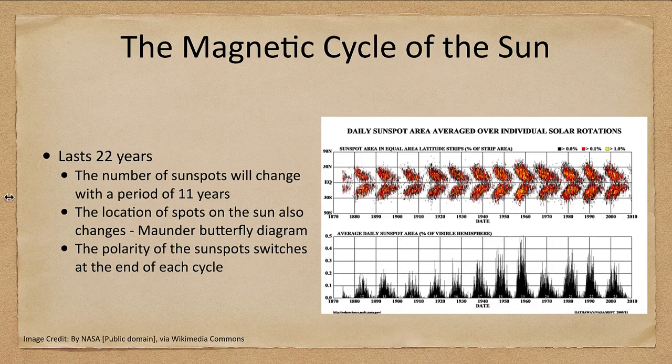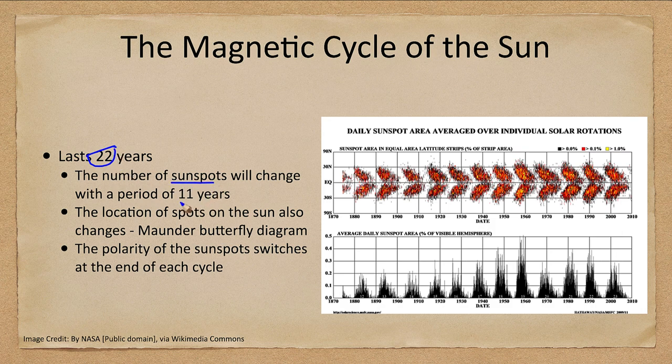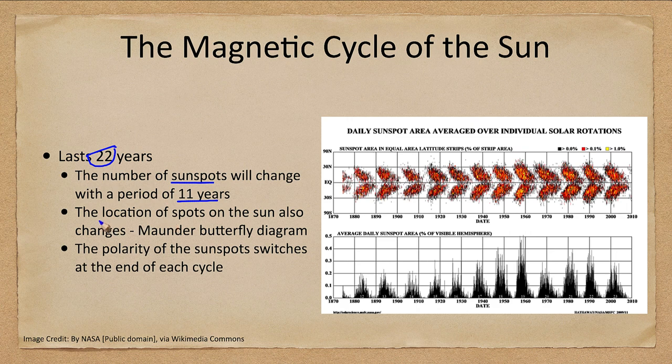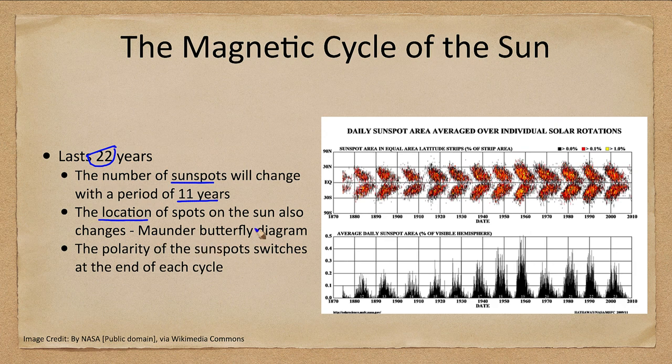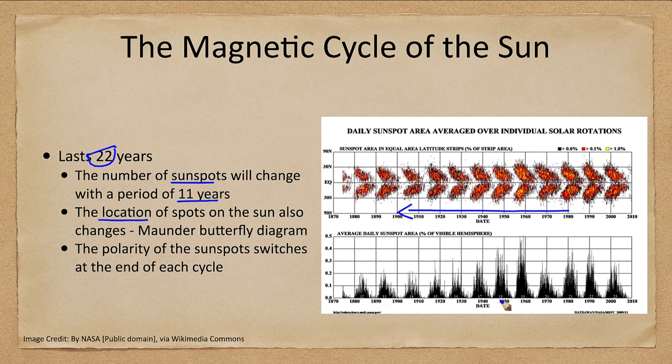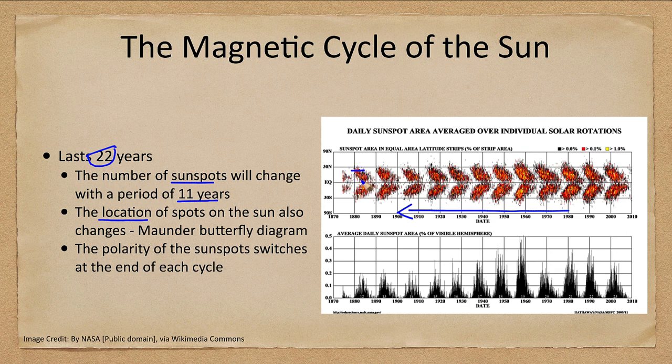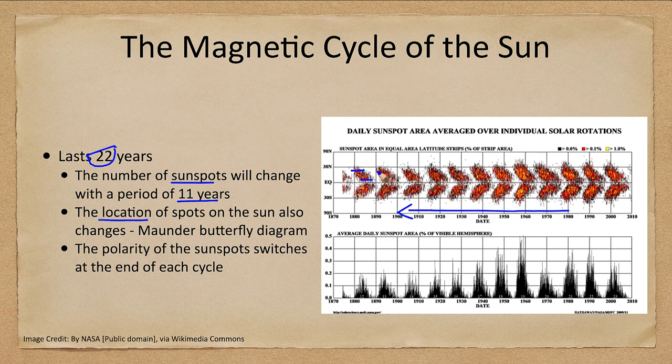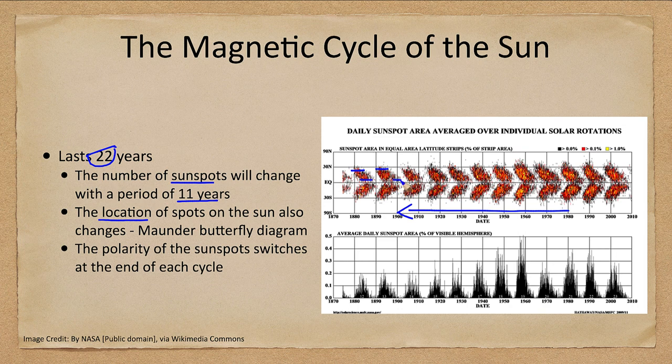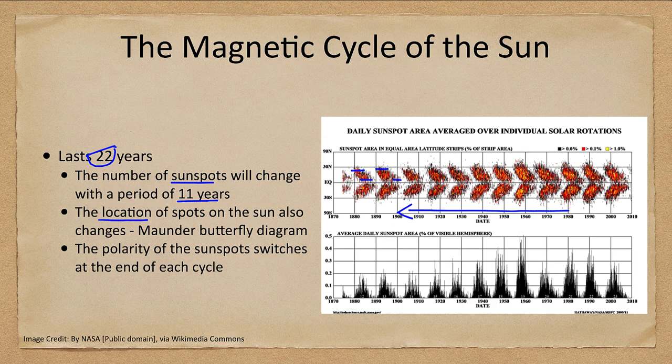The magnetic cycle, as I said, is a 22 year cycle. The number of sunspots changes with a period of 11 years, but not only the number but their location on the sun also changes. This is what we call the Maunder butterfly diagram because it may look like a bunch of butterflies traveling in one direction. Here the sun spots at the beginning of the cycle form at a higher latitude and they form at a lower latitude close to the equator at the end. Then they disappear a little bit and come back at higher latitudes and again finish up at lower latitudes, and that process continues.